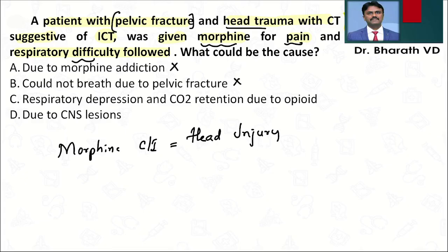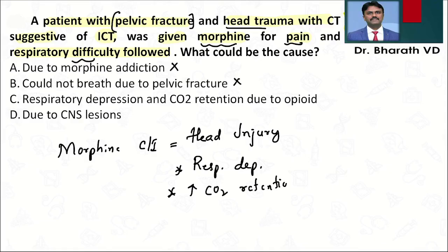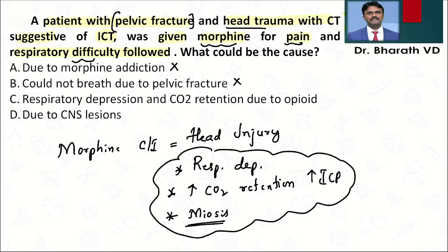Why is morphine contraindicated in head injury? There are three reasons. Number one: it causes respiratory depression. This increases carbon dioxide retention in the brain — and when there is CO2 retention, it further increases intracranial pressure. Second, it causes miosis, so you cannot assess the progression of head injury. Because of these three reasons, morphine should not be given to a patient with head injury.